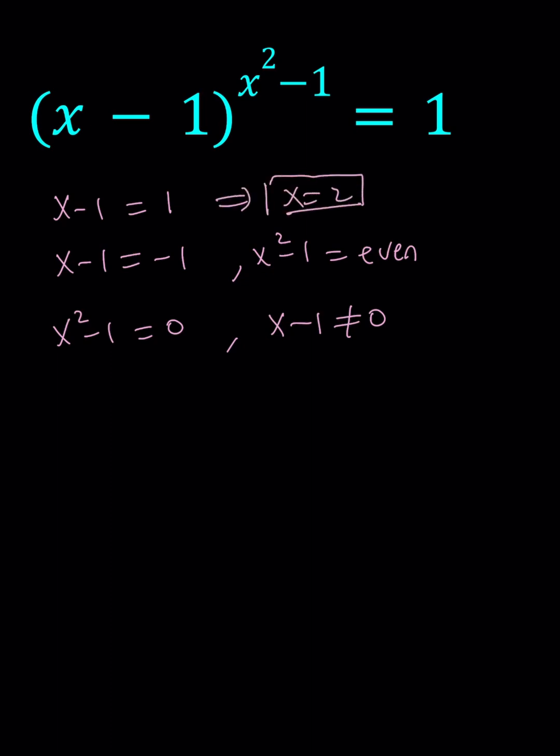From the second one, we get x equals 0, and if x is 0, 0 minus 1 is not even, because that's negative 1, therefore that's not going to work.